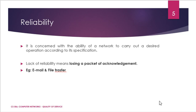The first characteristic is reliability. Reliability is concerned with the ability of a network to carry out a desired operation according to its specification. Lack of reliability means we are losing a packet acknowledgement — a sent packet does not reach the destination, so we send the same packet again. Sending the packet again and again degrades network quality. Email and file transfer are examples of reliability-dependent applications.